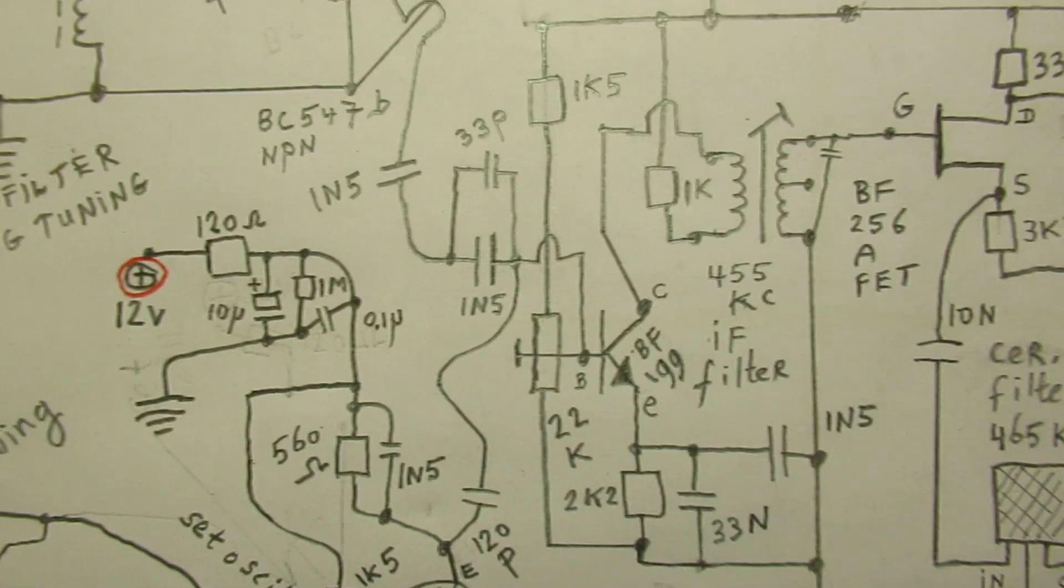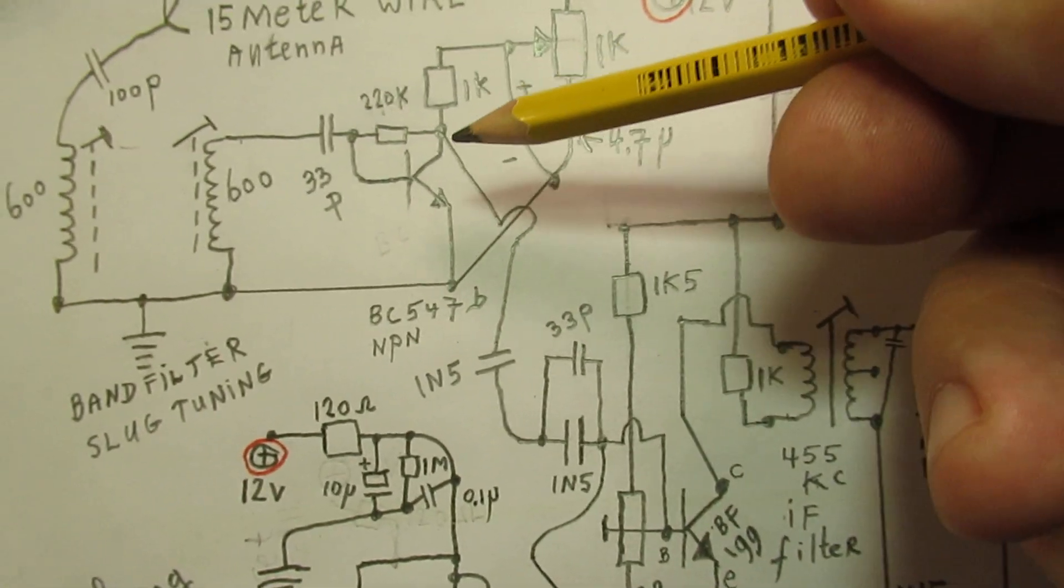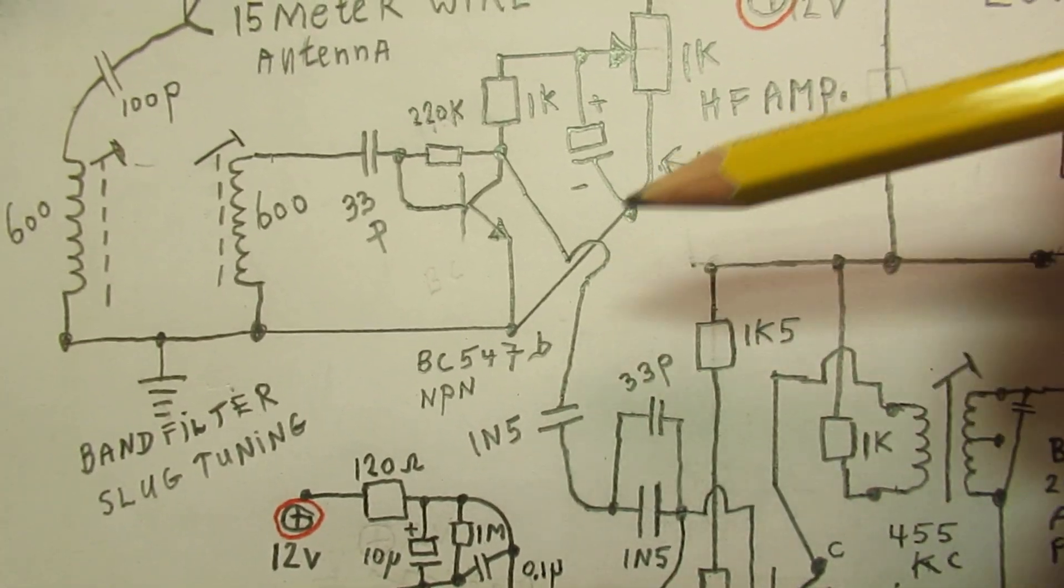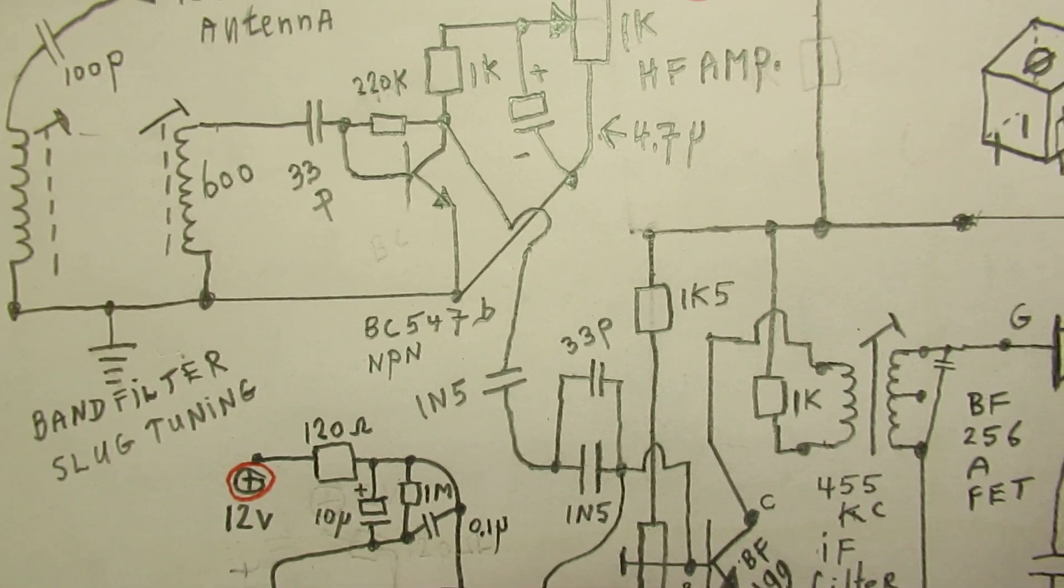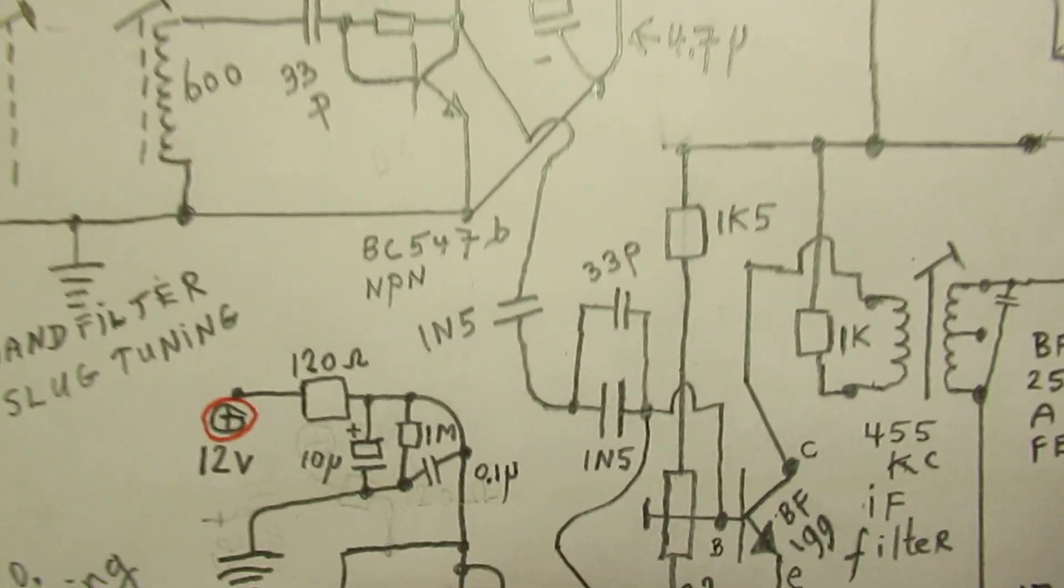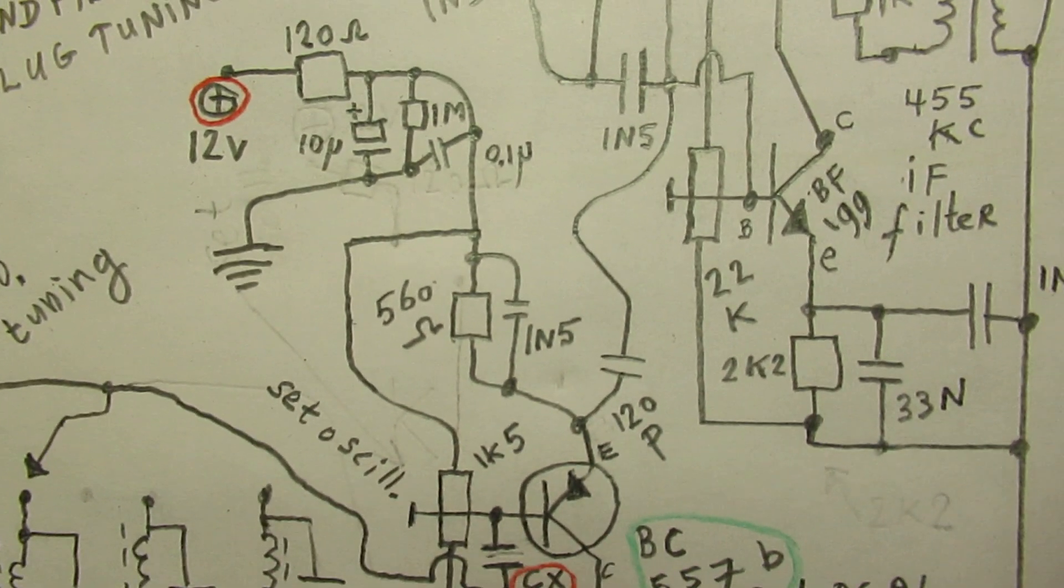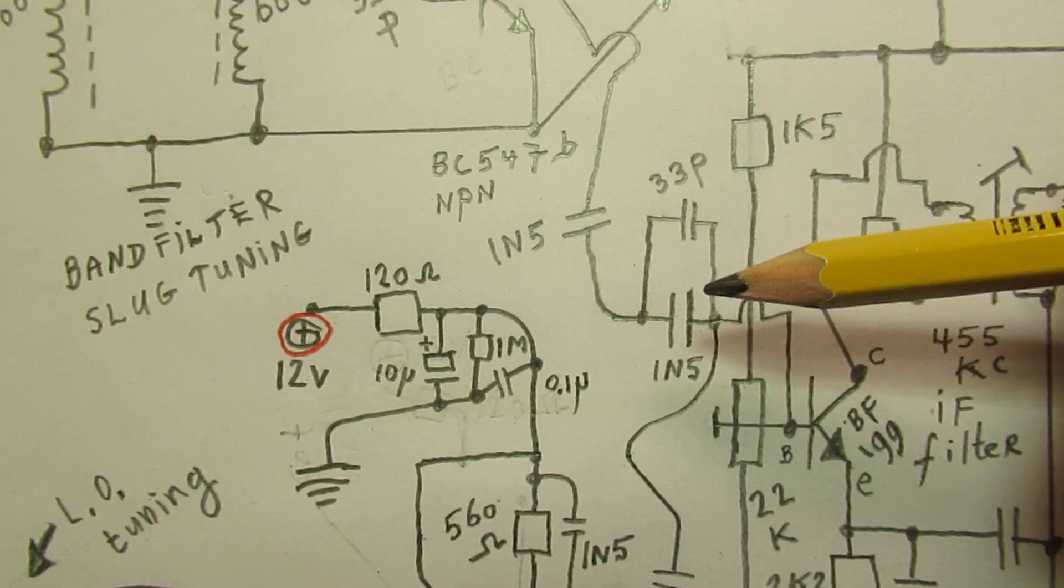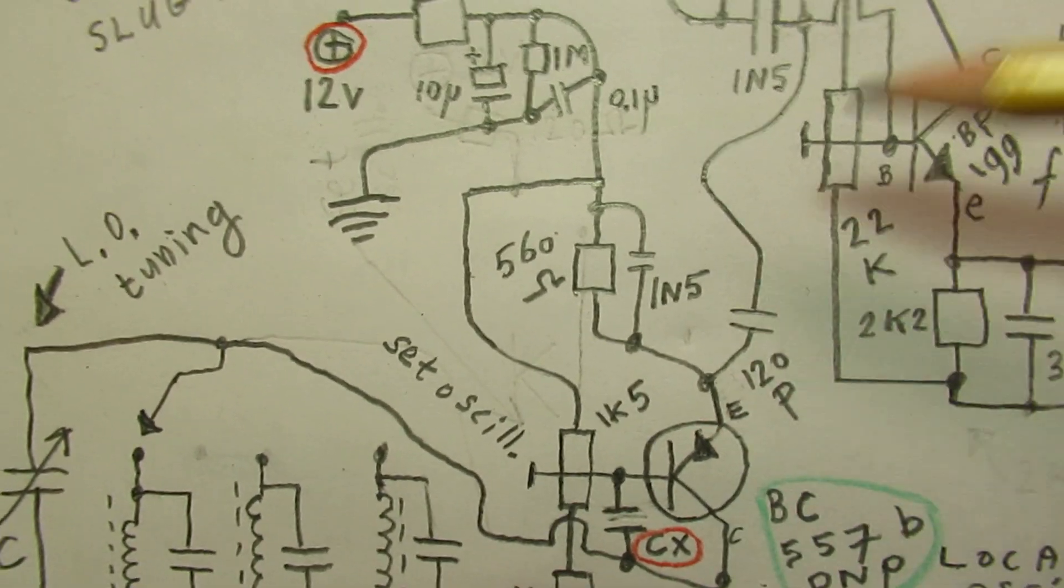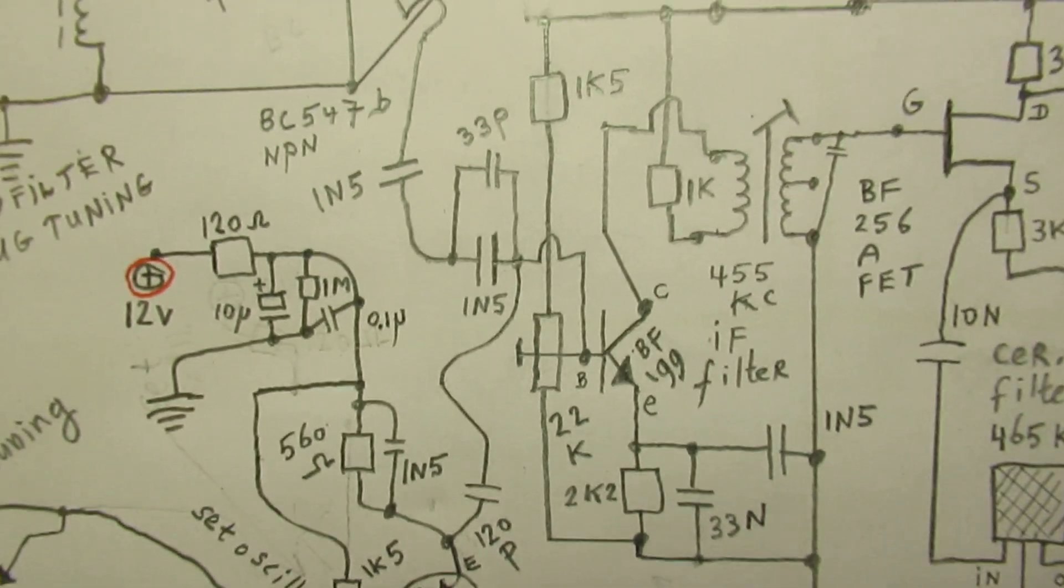Here, this is the mixer. Two signals are entering the base of the mixer, the BF199. One signal is out here, out of the first transistor, the high frequency amplifier. This is somewhat sloppy, but I have drawn it like I have made it. You can, for instance, ask what has this 33 picofarad capacitor to do there, when you have already 1500 picofarad capacitor, but anyway. So here is the signal of the first stage. Here the signal out of the local oscillator comes from the emitter, goes via 120 picofarad, also to the base of the mixer transistor.